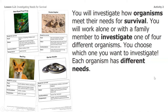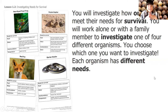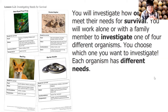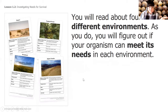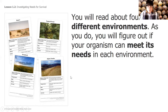After you and a family member discuss how your organism might survive in each environment, let me know what you discussed. I'm giving you the option of choosing one of four organisms. You can choose the red-eyed tree frog, the pocket gopher, the red fox, or the garter snake. The four environments we'll look at are the desert, tropical forest, grassland, or alpine tundra. You'll go through all of these environments and observe what they're like.